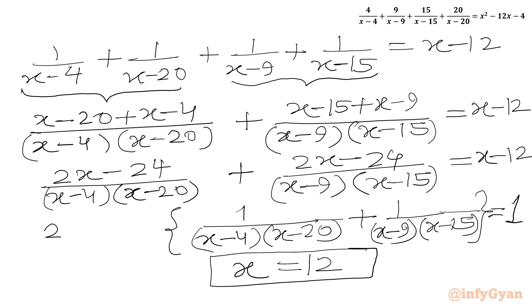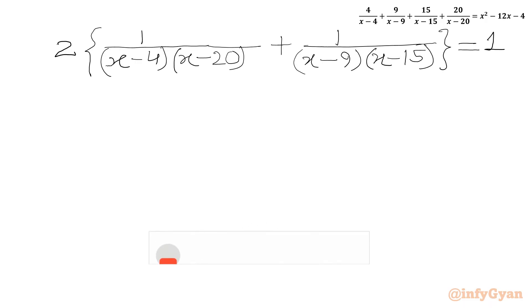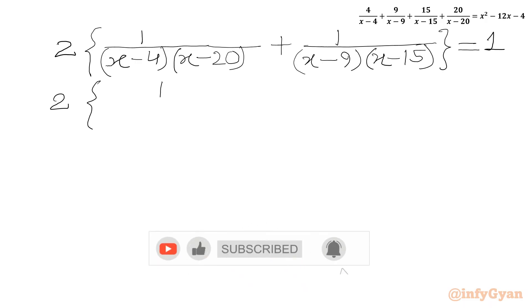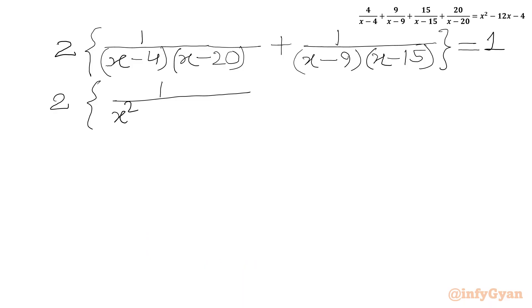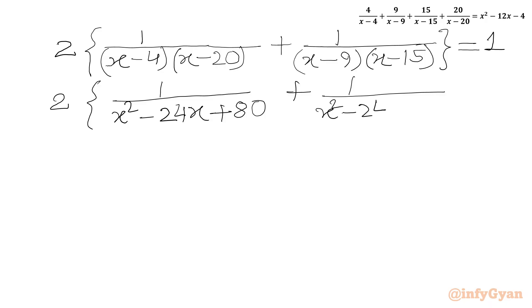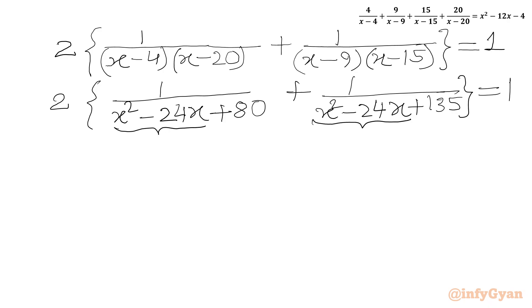Now we have to simplify the curly bracket. We can write 1/(X²−24X+80) + 1/(X²−24X+135) equals 1. Now let X² minus 24X equal Y.